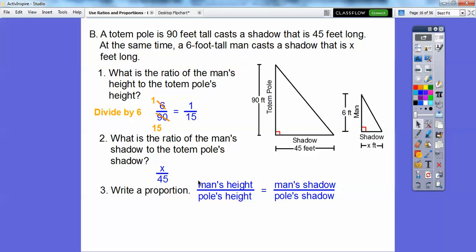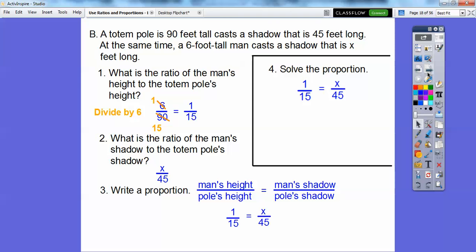Okay, all right, so let's put this in here. So the man's height and the pole's height right here is this ratio, 1/15th. Okay, and then the man's shadow and the totem pole's shadow is this ratio, x over 45. Okay, so now we can cross multiply and solve for this proportion right here.